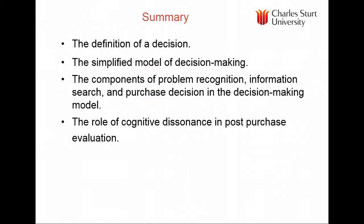This is a skeleton lecture — there are additional factors discussed in chapter 10, written by colleague Hume Windsor, including involvement, means-ends chains, fear of making a decision, and more. Today we covered the definition of decision, the simplified decision-making model, the components of problem recognition, information search, the decision, and the role of cognitive dissonance in post-purchase evaluation. Hope you found this lecture enjoyable, as we did in conducting the mobile phone switching research back in 2011 and 2012.